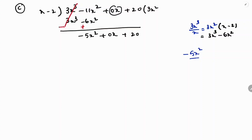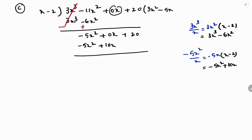Divide -5x² by x to get -5x. Write -5x in the quotient and multiply with x - 2: -5x × x = -5x², and -5x × (-2) = +10x. So we get -5x² + 10x. Subtract: -5x² cancels, and 0x - 10x = -10x. Bring down +20 to get -10x + 20.